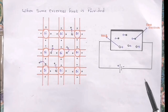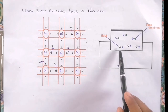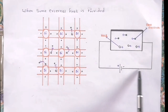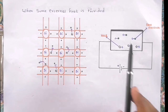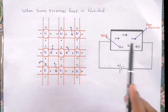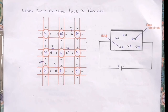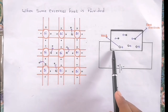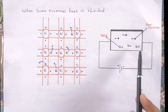Electrons are negatively charged and holes are positively charged. Like charges repel and unlike charges attract each other. Holes, being positively charged, are attracted towards the negative terminal of the battery, and electrons, being negatively charged, are attracted towards the positive terminal. Inside the semiconductor, the net current is due to the movement of both holes and electrons.